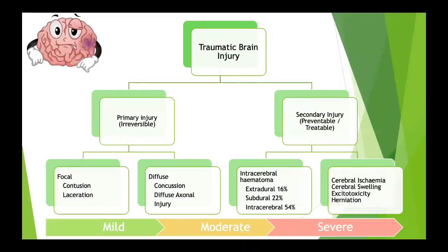Traumatic brain injury involves a primary injury that happens at the time of impact — largely irreversible — which can be focal or diffuse. Then there are secondary injuries, which is really where all our efforts go to prevent or effectively treat. These include intracerebral hematomas, extradurals, subdurals, contusions, cerebral ischemia, cerebral swelling, excitotoxicity, and herniation syndromes — all on a spectrum from mild to very severe.